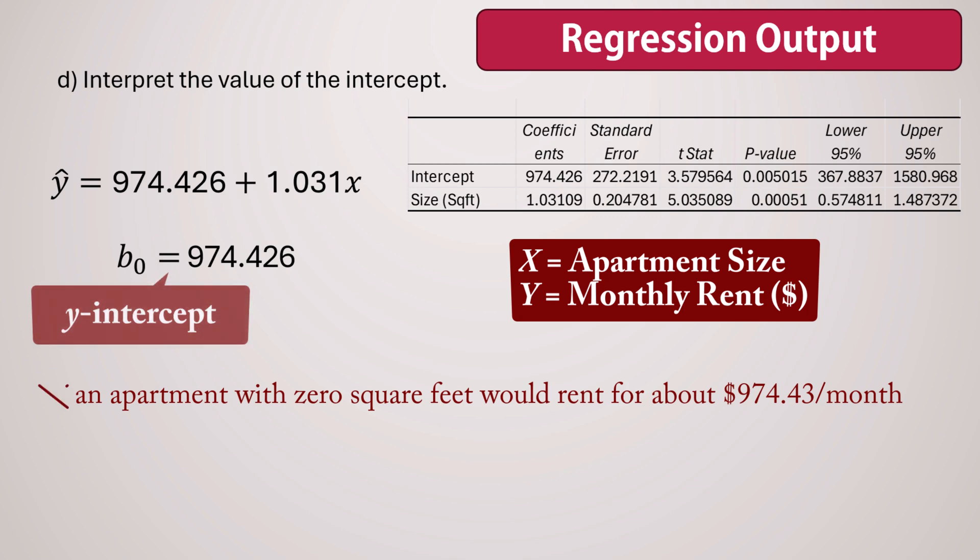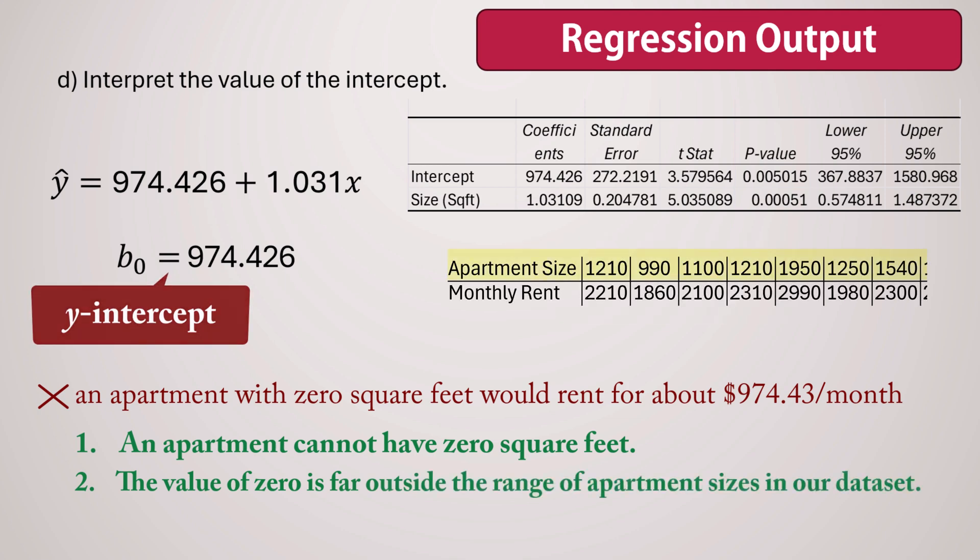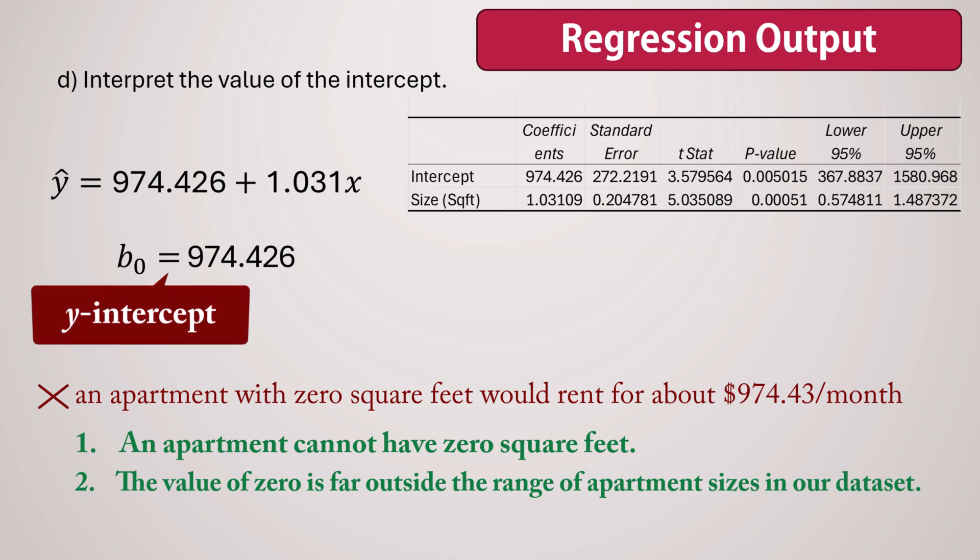However, this lacks practical meaning because an apartment cannot have 0 square feet, and the value of 0 is far outside the range of apartment sizes in our dataset. Therefore, while mathematically correct, the intercept in this regression equation should not be interpreted literally.